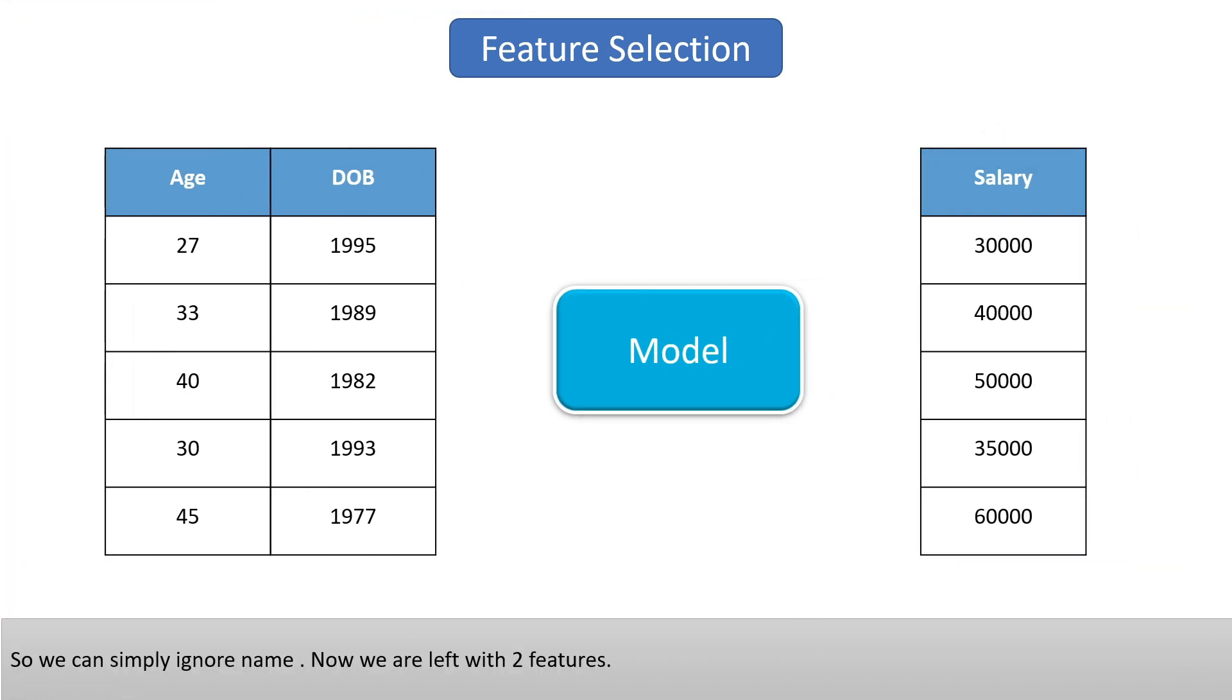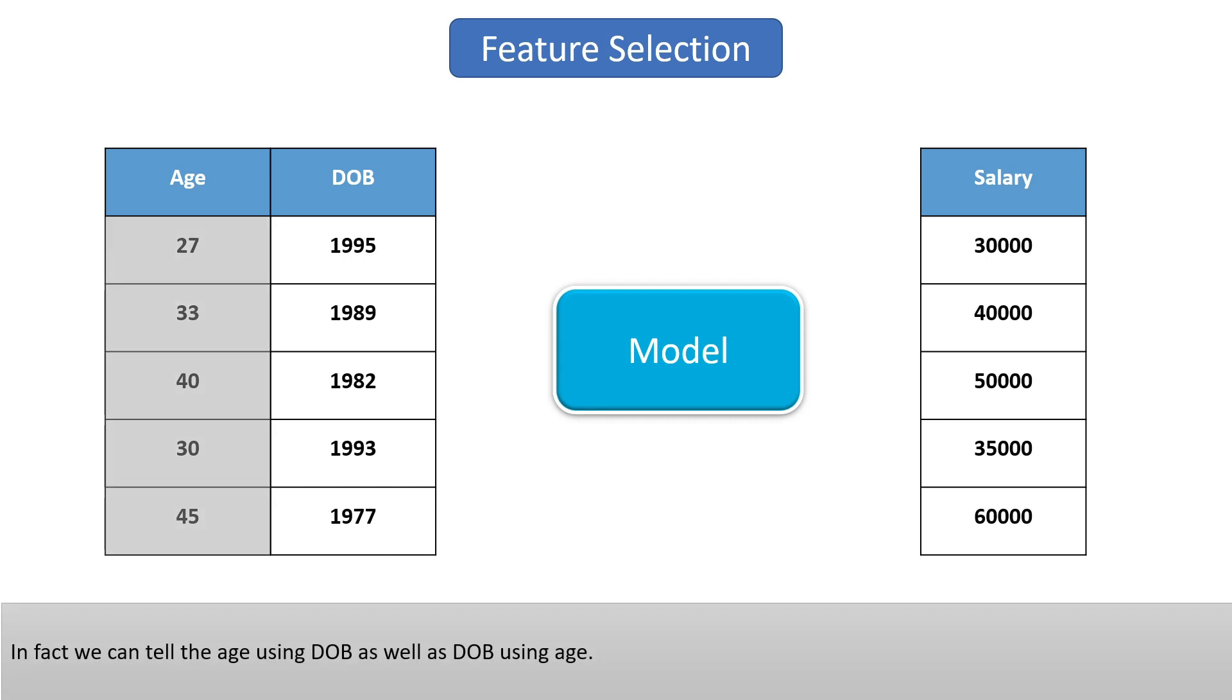Now we're left with only two features. If we look at these two features, they're not different from each other. In fact, we can tell the age using date of birth, as well as date of birth using age.